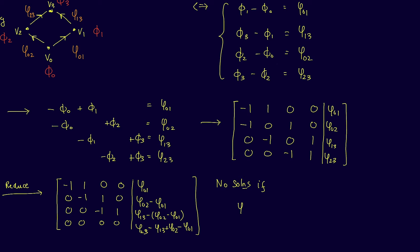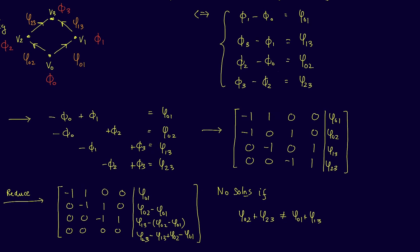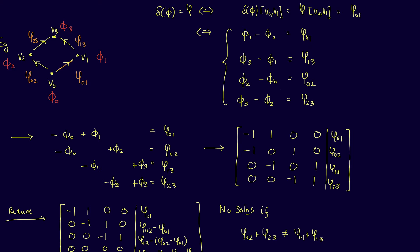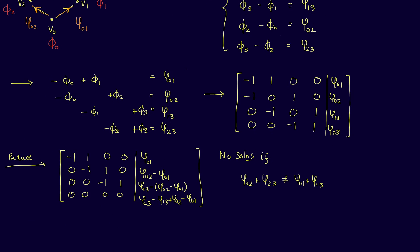Thus we see that there are no solutions when the right-hand side of the last column is non-zero. Let's interpret this condition in terms of the vertices and edges of X. For the right-hand side to be zero, we need ψ₀₁ + ψ₁₃ to be equal to ψ₀₂ + ψ₂₃. This can be loosely interpreted as saying that it doesn't matter which path you take from v₀ to v₃ under ψ—you'll get the same result. When this happens we call ψ additive. In other words, the equation δφ = ψ has a solution if and only if ψ is additive.